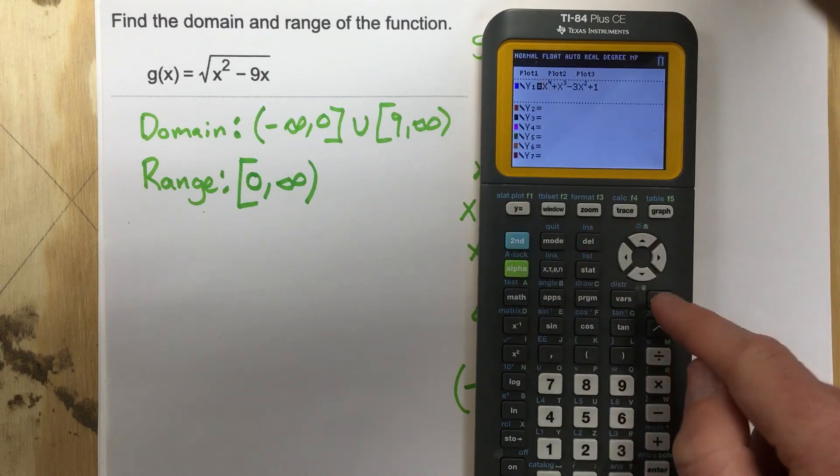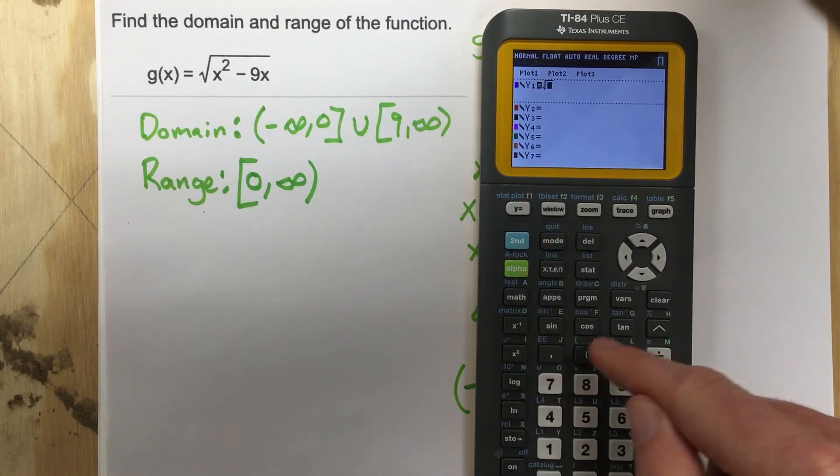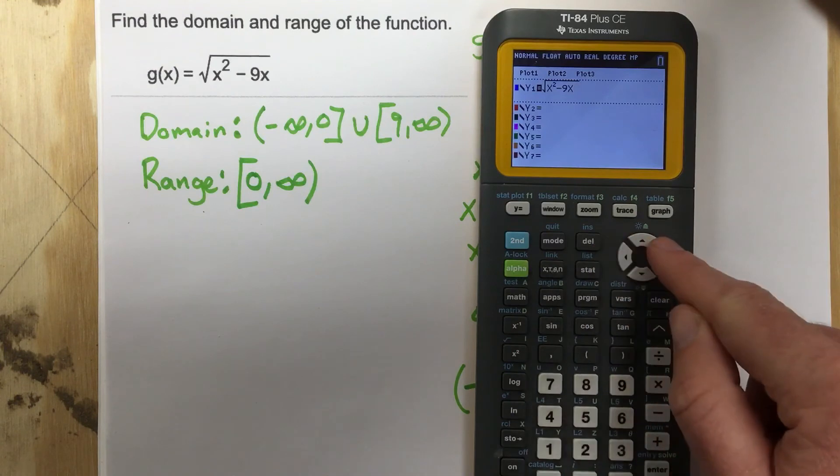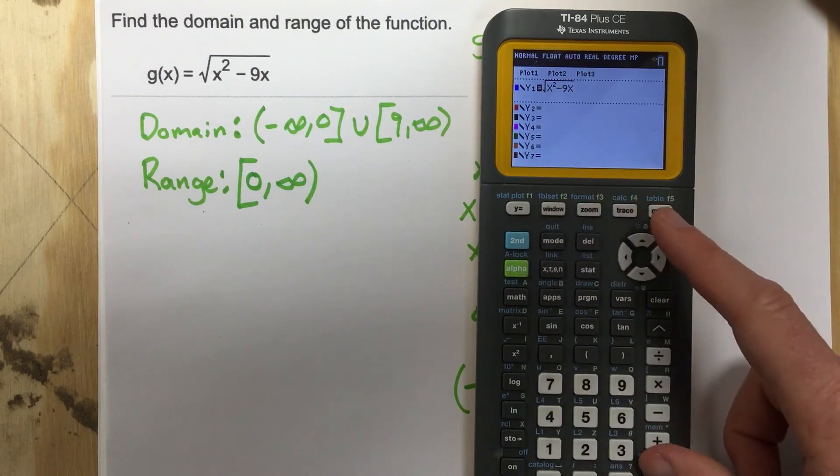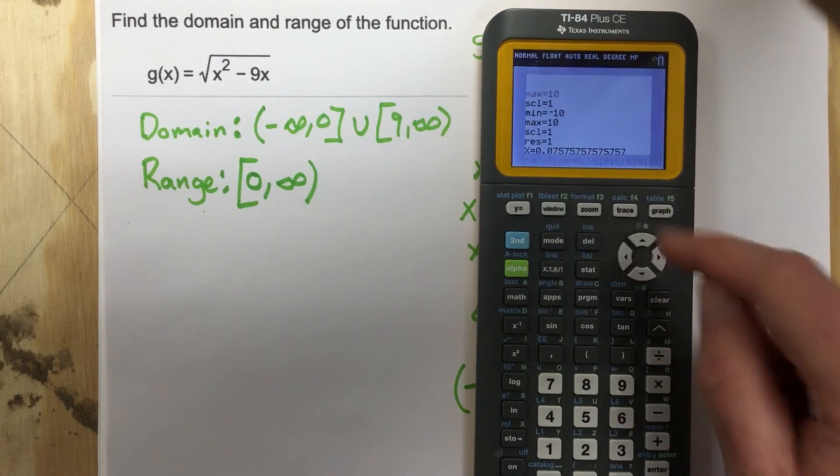I'm going to graph it on my TI-84 here just to make sure. So we're going to go to y equals and we're going to type in root x squared minus nine x. And you got to remember that you're going to go to window once you're done with that. I'll hit enter. Then I'll go to window. Make sure I've got negative 10, 10, one, negative 10. All right, we're good. We're going to hit the graph button.